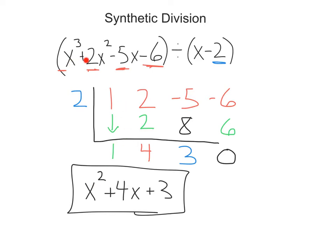So this x cubed plus two x squared minus five x minus six divided by x minus two: setting up those coefficients, bring down, multiply, add — multiply, add — multiply, add — gives us our coefficients of our answer. In this case, x squared plus four x plus three.